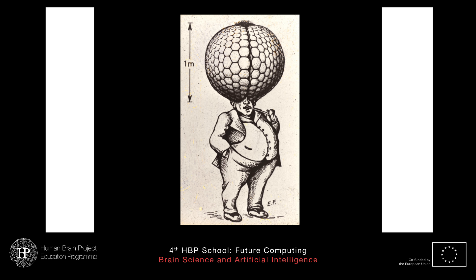Do you know how many pixels we have in our vision? About one megapixel — and that's for the two eyes together. If you compare that to a camera with a zoom lens, your eye seems to do everything. The reason is that we have high spatial resolution in the particular direction we look at — we sample really densely in one small part and then have much coarser sampling for the rest of the visual field. Cameras don't do that, at least not yet.